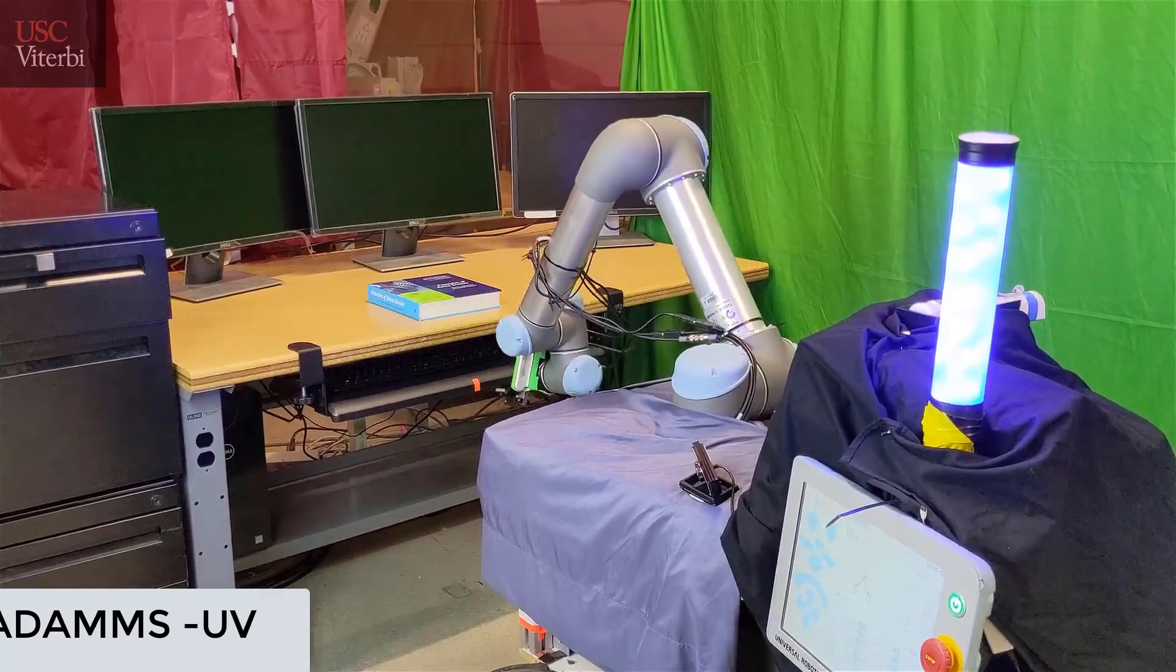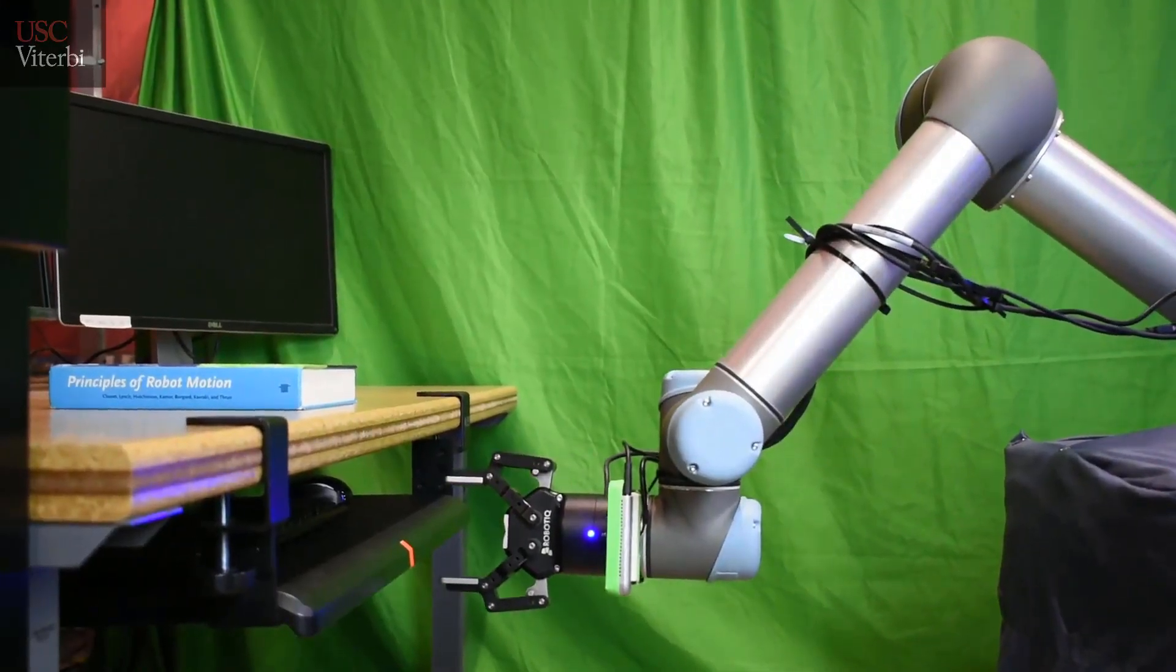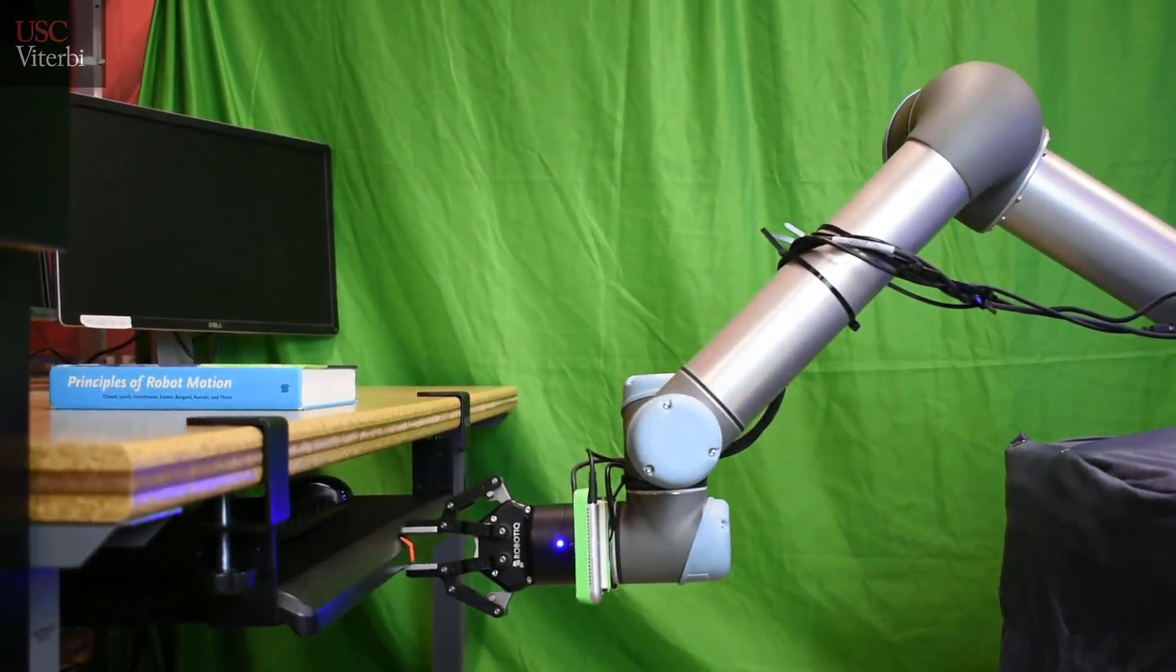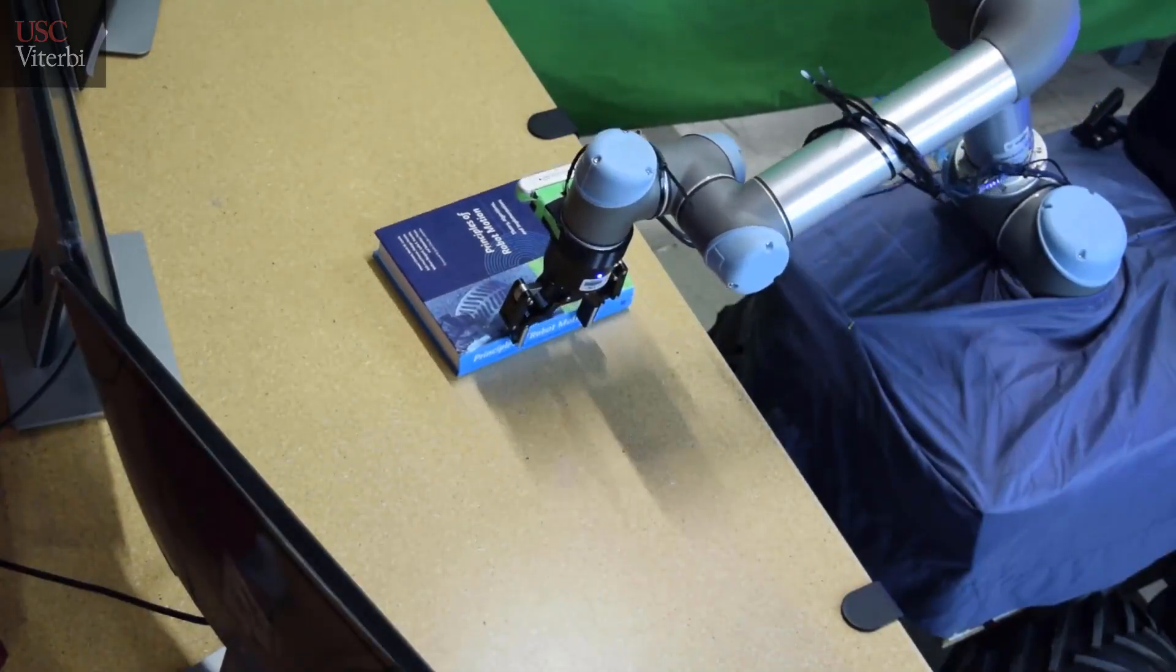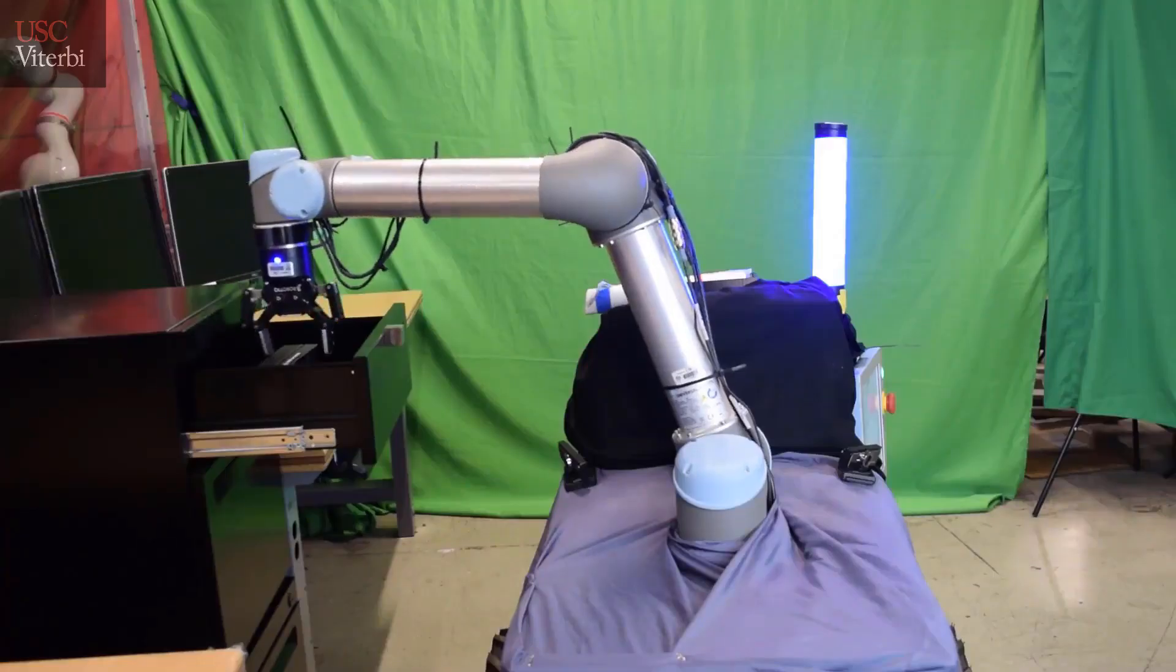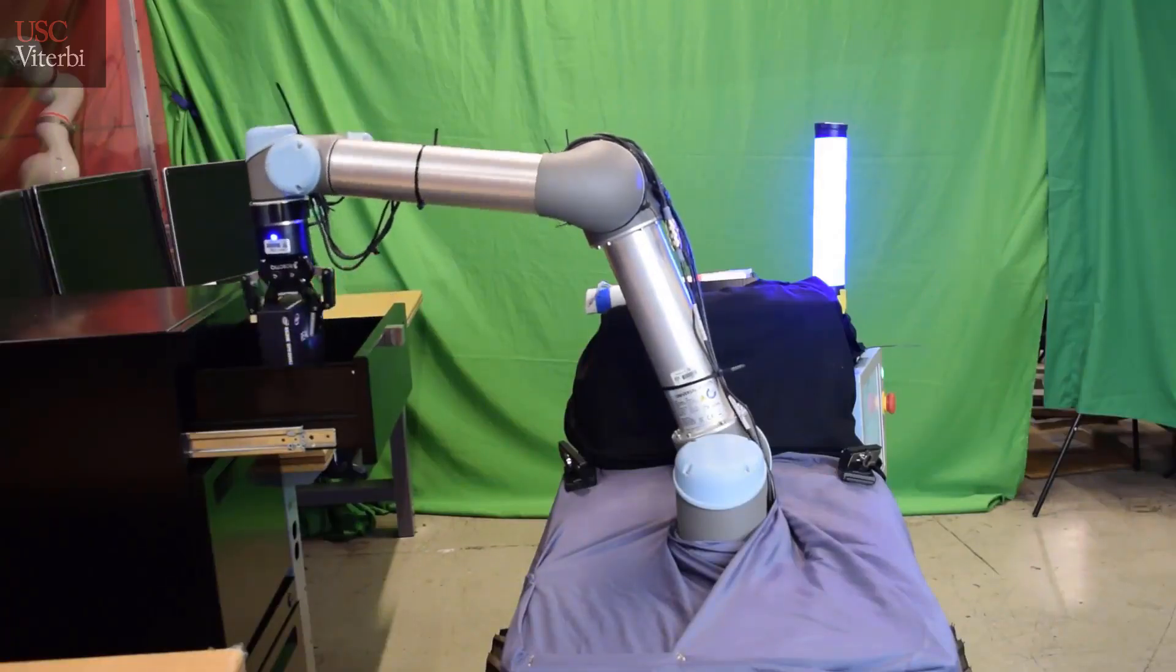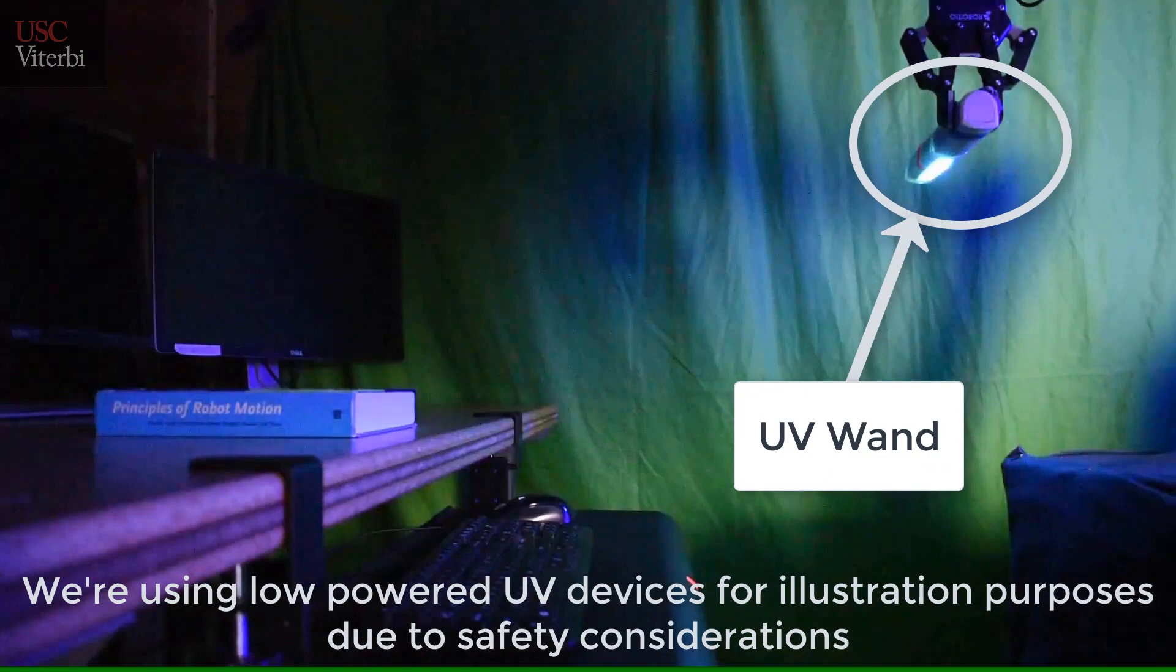ADAMS UV is a semi-autonomous mobile manipulator that uses a UV light wand mounted on a robot arm to reach spaces that cannot be treated by UV sources mounted on the mobile base. It can use a gripper to open drawers, closets, and pick up objects to perform detailed sanitation on hard-to-reach surfaces.